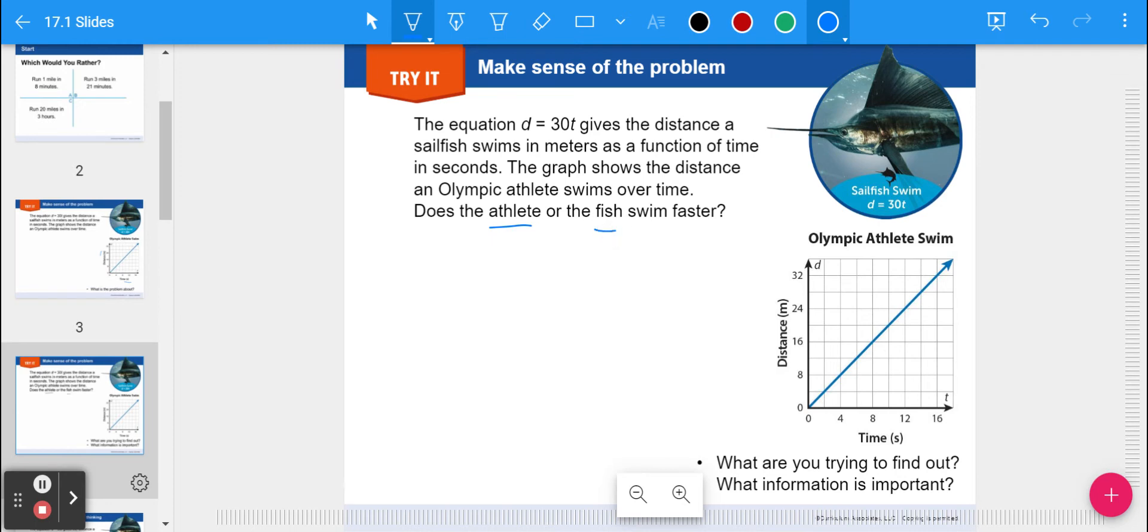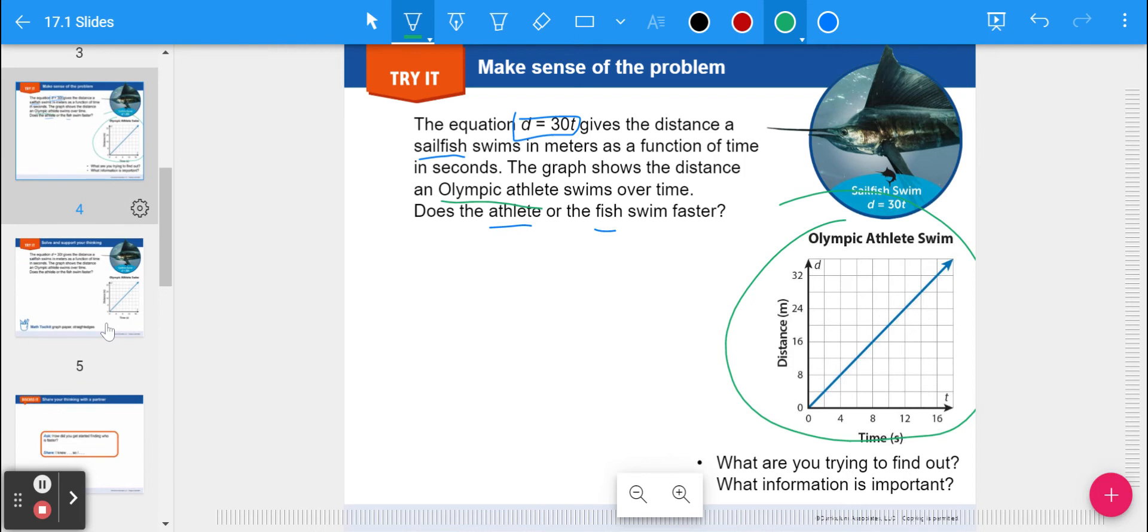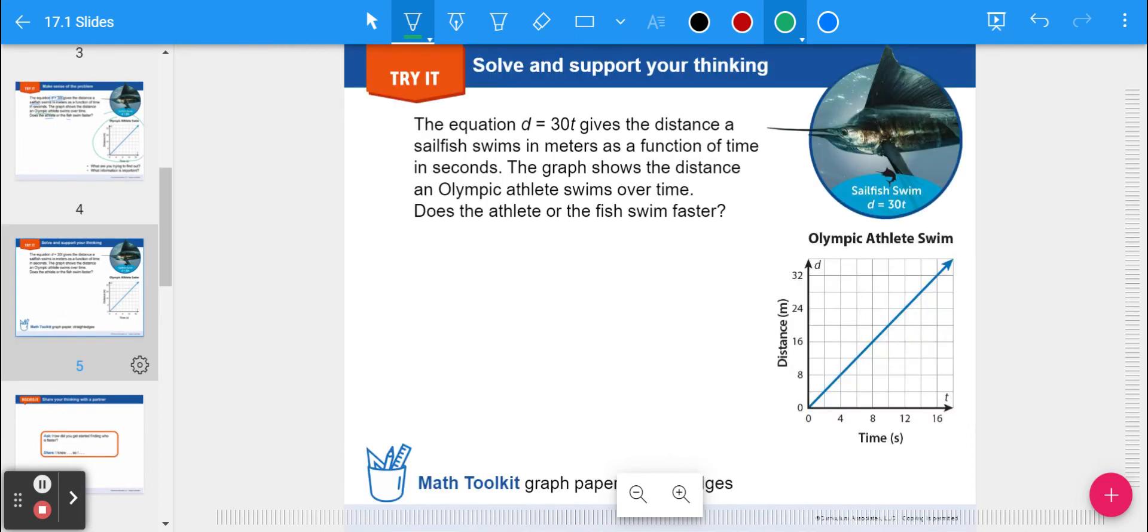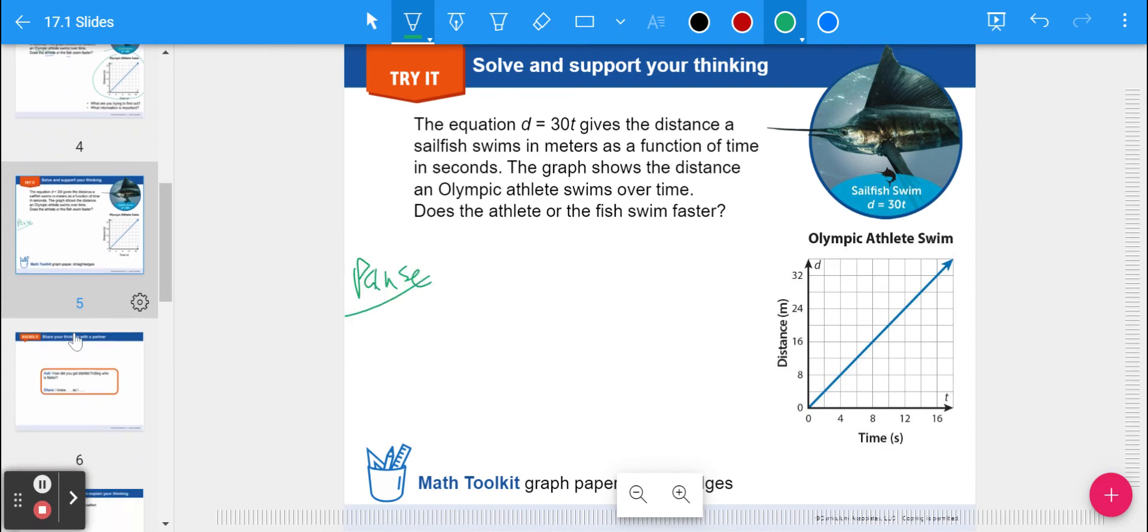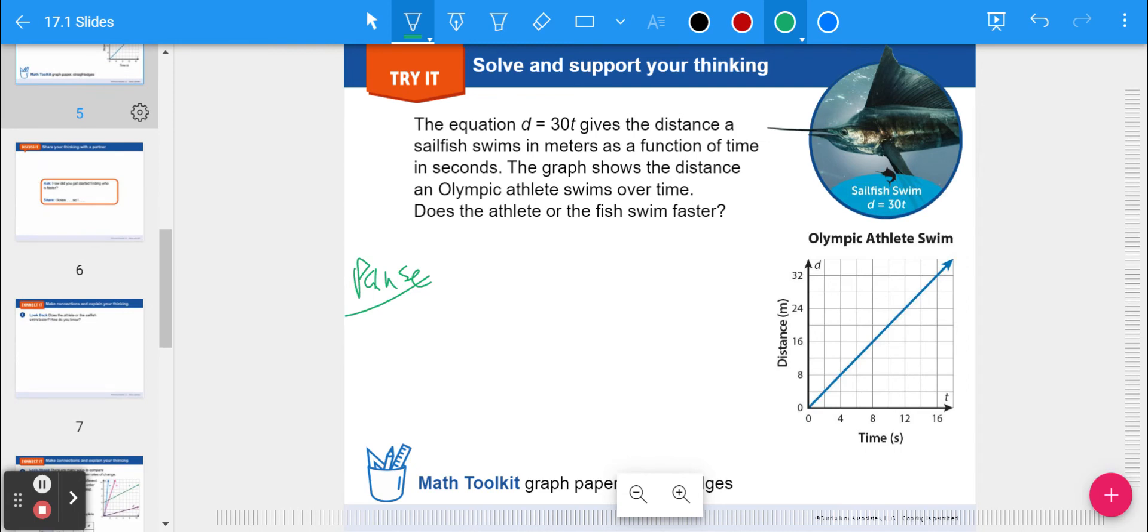We're talking about swimming and rates of swimming, and from the given information, you're given an equation that has to do with the sailfish, and a graph that has to do with the Olympic swimmer. The Olympic athlete, this is the graph. So which one swims faster? You can maybe take a guess, but give a reason. Give them what their speeds are based off of that information. I'm going to give you guys a chance to pause and try.